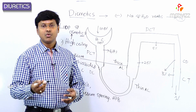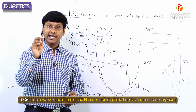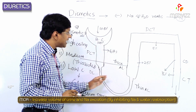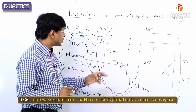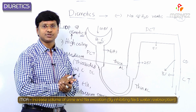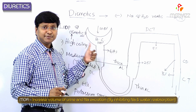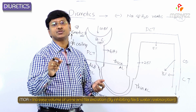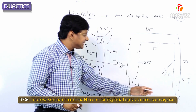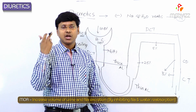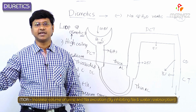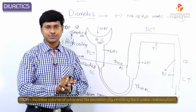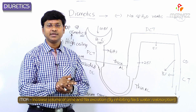When you give diuretics, they will increase the volume of urine and increase the amount of sodium excretion by inhibiting sodium reabsorption at various levels of the tubules. Whenever the process of natriuresis is taking place, water is also taken along with the sodium, and thereby the individual's fluid overload will be reduced. This is what the diuretics are doing in our body.